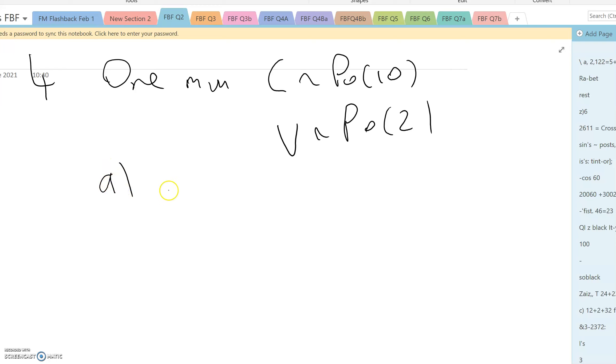That means when we're talking about two minutes, cars have a Poisson distribution with mean 20, and vans have a Poisson distribution with mean 4.